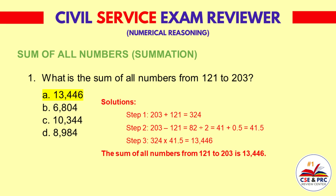The answer is a. 13,446. Solution — Step 1: 203 plus 121 is equal to 324. Step 2: 203 minus 121 is equal to 82, divided by 2 is equal to 41, plus 0.5 is equal to 41.5. Step 3: 324 times 41.5 is equal to 13,446. The sum of all numbers from 121 to 203 is 13,446.